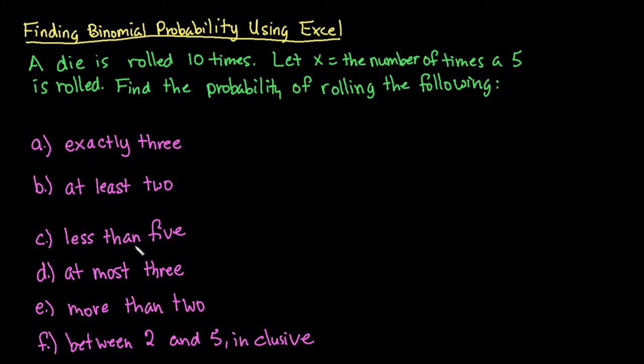So the situation we have here is a die is rolled 10 times, and we want to let x equal the number of times a 5 is rolled. And so we're going to find the probability of rolling the following. I went through one of each type so that you understand how to do this. So like I said, the two things that we need to know are the number of trials that we are doing. So in this case, we rolled the die 10 times, so n would equal 10. And the probability of success, which is p, would be 1 out of 6 since there is 1 five out of 6 numbers on a die.